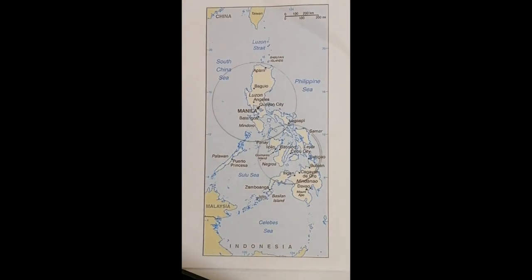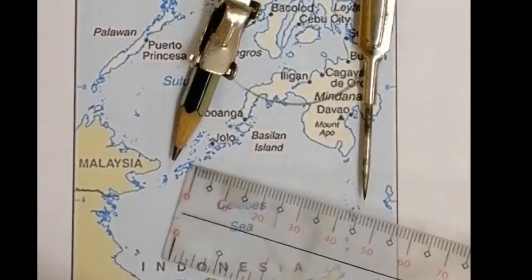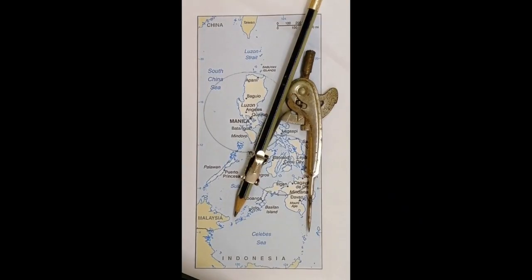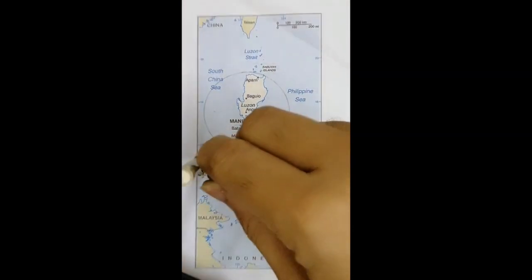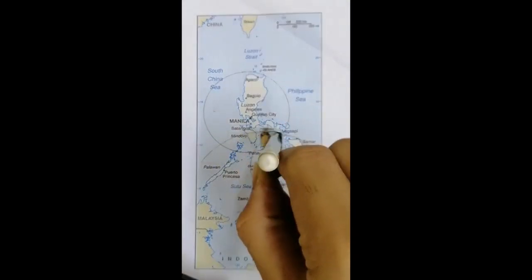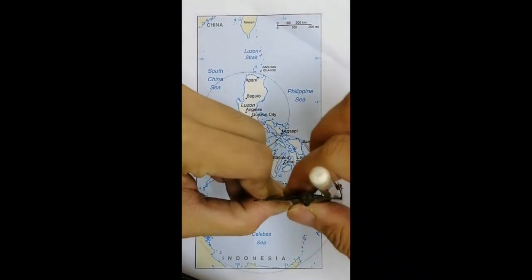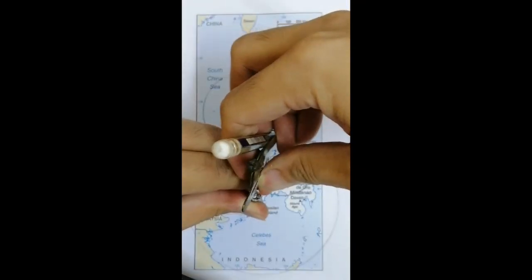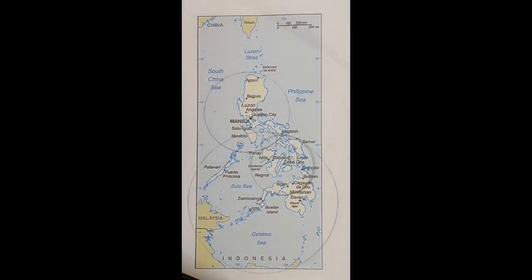Let us continue with the third seismic station. The last station is Zamboanga City, which is 693.3 kilometers away from the possible epicenter location — 5.2 centimeters on the map. Set the drawing compass to 5.2 centimeters, place it on Zamboanga City, and draw the circle. The triangulation method is now complete.